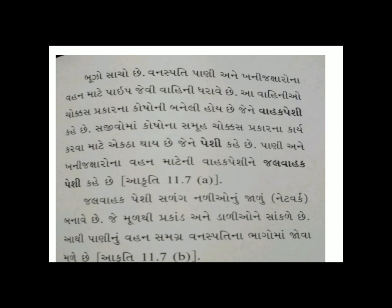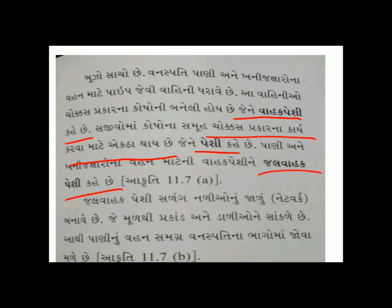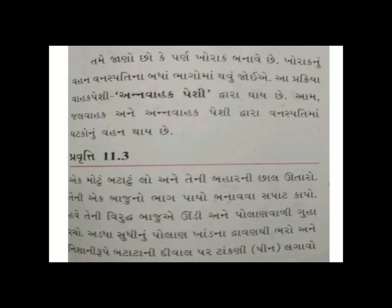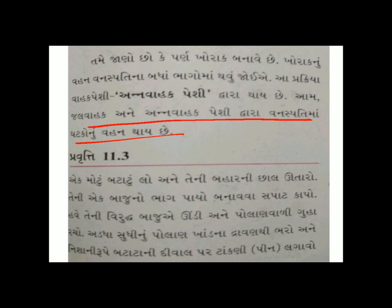વનસ્પતિ પાણી અને ખનિજ ક્ષારોના વહન માટે પાઇપ જેવી વાહિની ધરાવે છે. આ વાહિની ચોક્કસ પ્રકારના કોષોની બનેલી હોય છે, જેને વાહક પેશી કહેવામાં આવે છે. પાણી અને ખનિજ ક્ષારોના વહન માટેની વાહક પેશીને જળ વાહક પેશી (ઝાયલેમ) પણ કહેવામાં આવે છે. આ જળ વાહક પેશી મૂળ, પ્રકાંડ અને ડાળખી સુધી ફેલાયેલ નેટવર્ક છે.